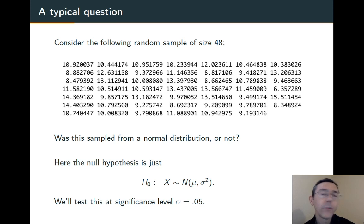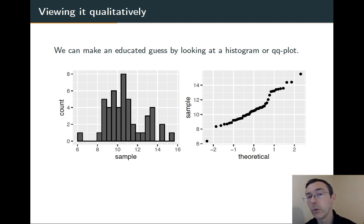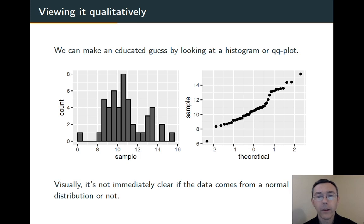So, we have some ad hoc methods. We can, for example, just graph this with a histogram or a QQ plot and try and determine if it's normal just by sight. The histogram has a vaguely bell shape, but only vaguely. And the QQ plot has a vaguely linear shape, but again, only vaguely. Overall, it's hard to tell with any degree of certainty whether or not this data is coming from a normal distribution or not.